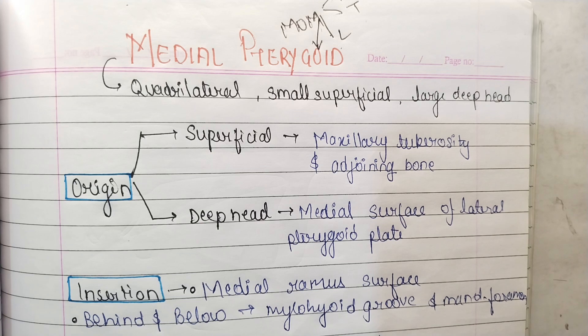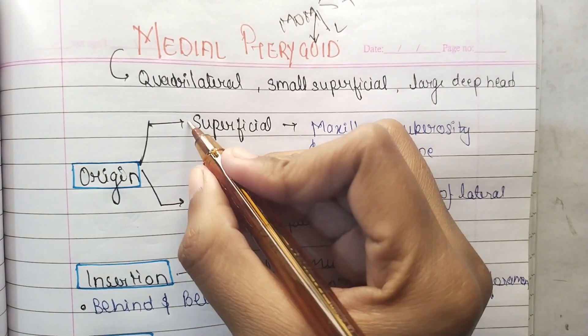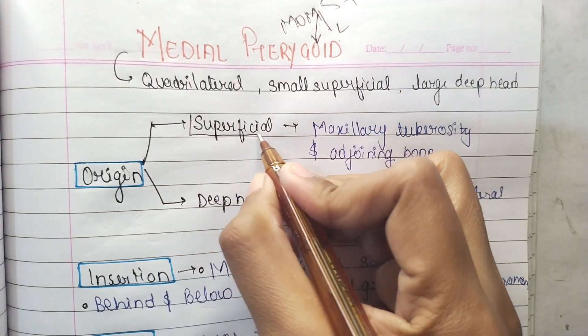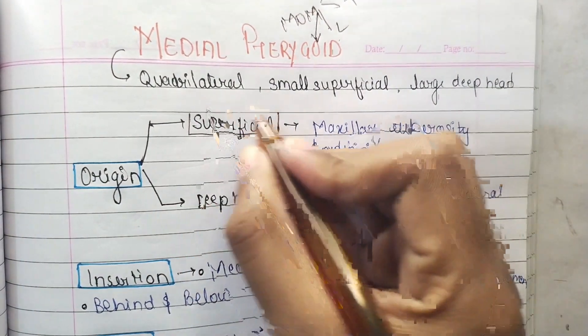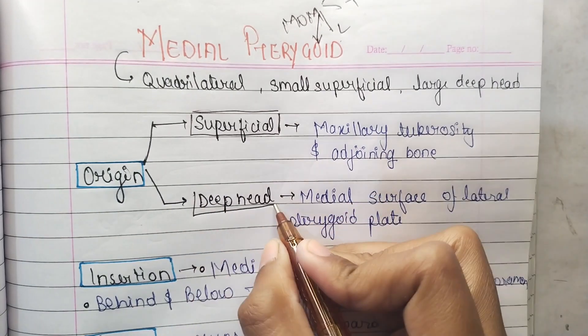The medial pterygoid muscle is quadrilateral. It has a small superficial head and a large deep head, so we have two parts to look at: the superficial and the deep head.